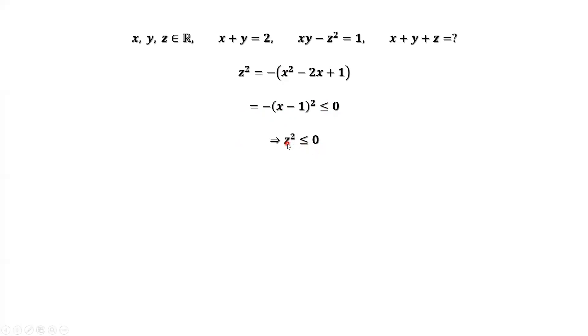However, z squared must be greater than or equal to zero. Therefore, z equals zero. So x plus y plus z equals 2 plus zero equals 2. That's all. Thanks for watching and see you next time.